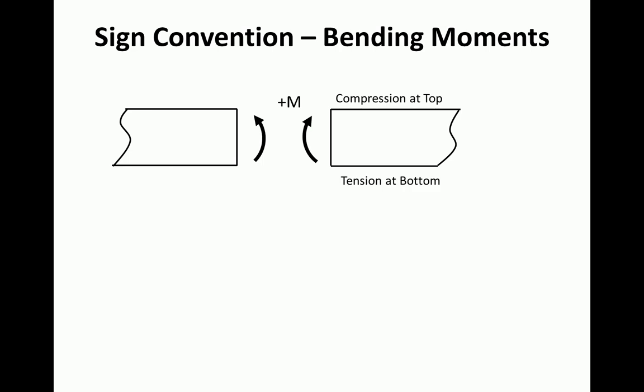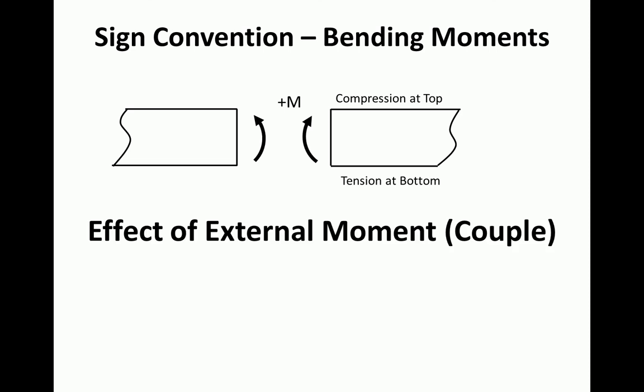Before we look at the moments, it's a good idea to review the sign convention. When we cut a beam in two and look at the internal stress results, a positive bending moment is one that creates compression at the top of the beam and tension at the bottom. Now, let's also consider what happens when we add a couple or an external moment. At the end of the beam, here's an applied moment, either an applied or a reaction moment, but an external moment. When we make a cut within the beam close to there, and we look at what's required for equilibrium, we see that the moment that is required for equilibrium here is a positive bending moment.